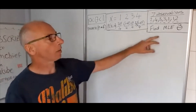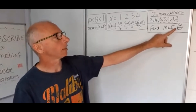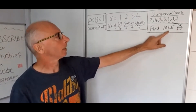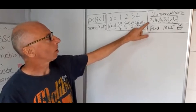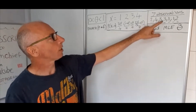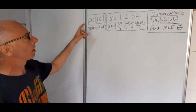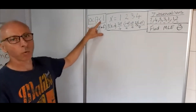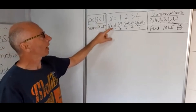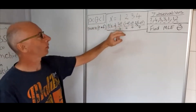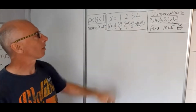We've got a question here: we need to find the maximum likelihood estimate of theta, and we call that theta hat. We've got seven observations of which x equals 2, 4, 3, 3, 1, 1, and 2. Theta is given between 0 and 1, and the probability that x equals 1, 2, 3, or 4 is given by these four functions here.